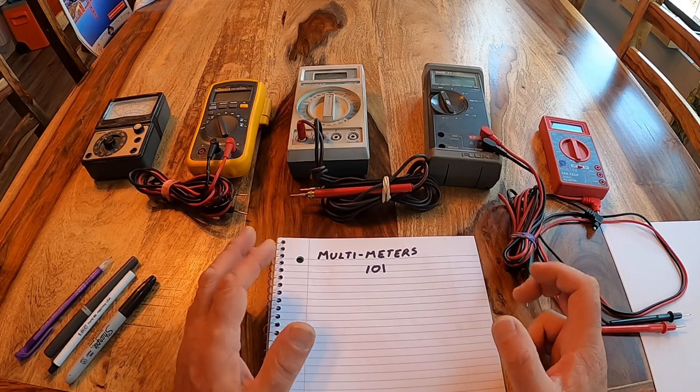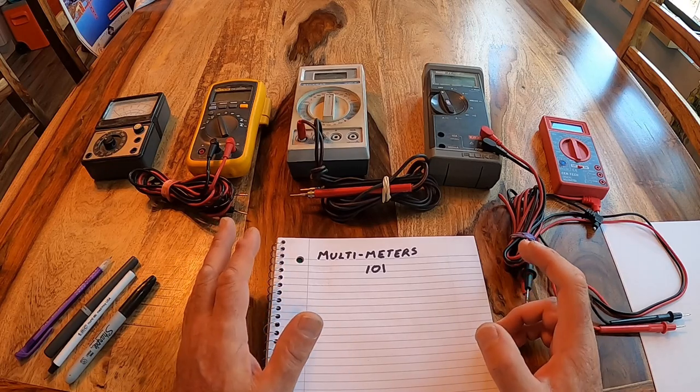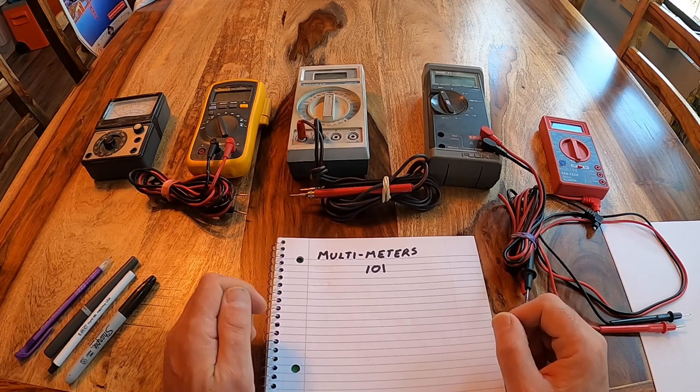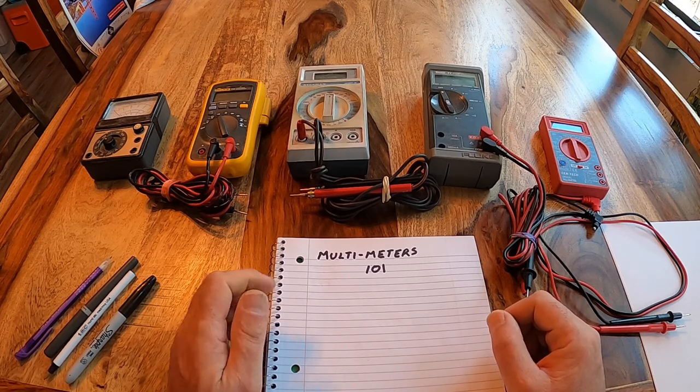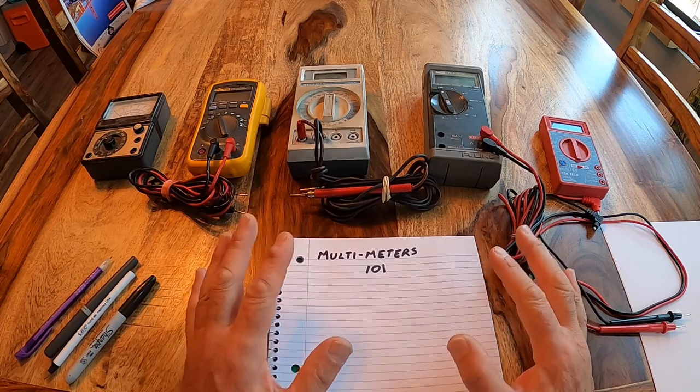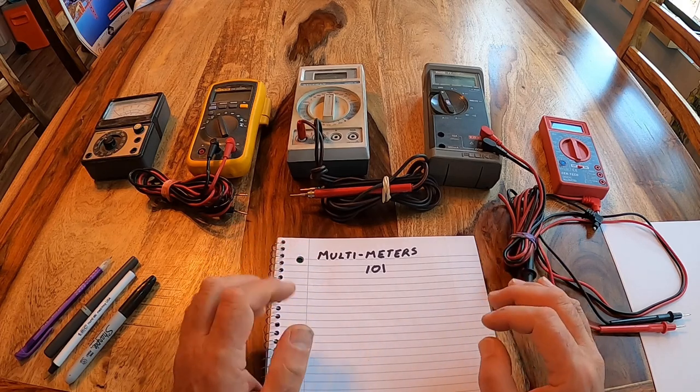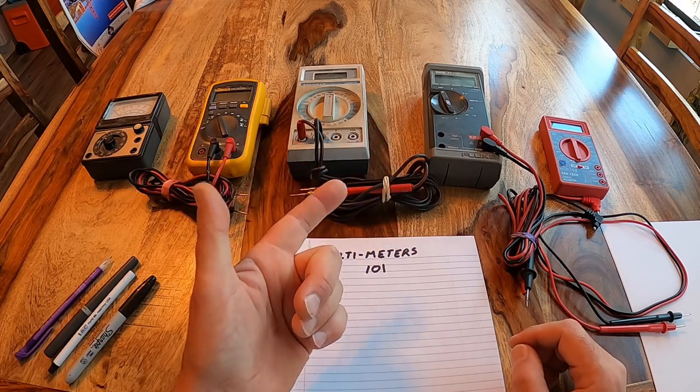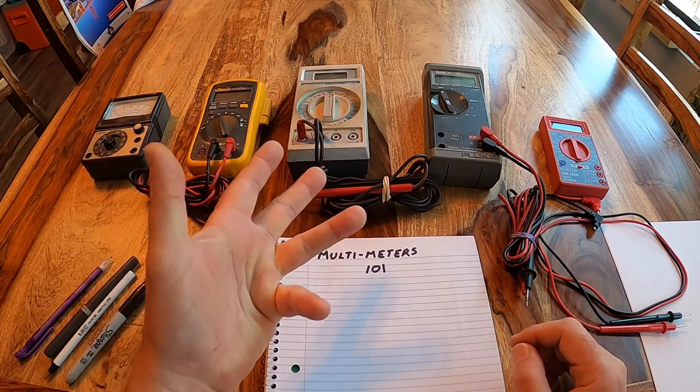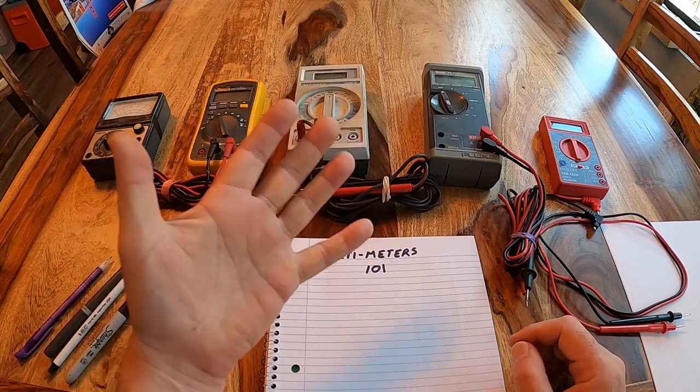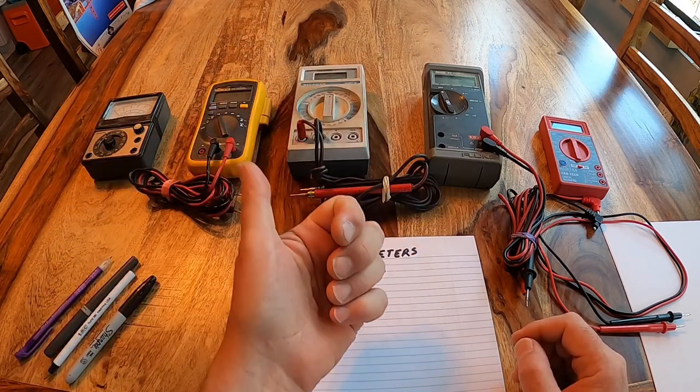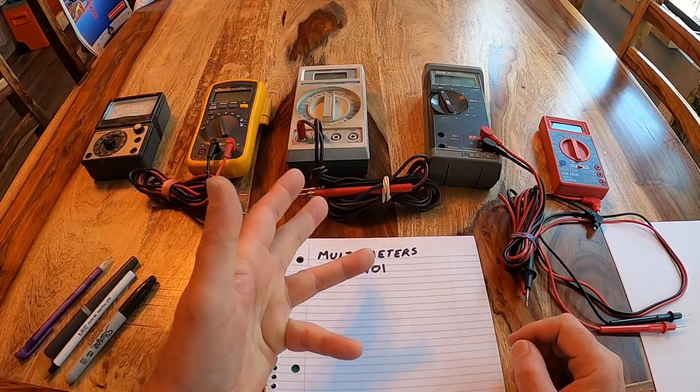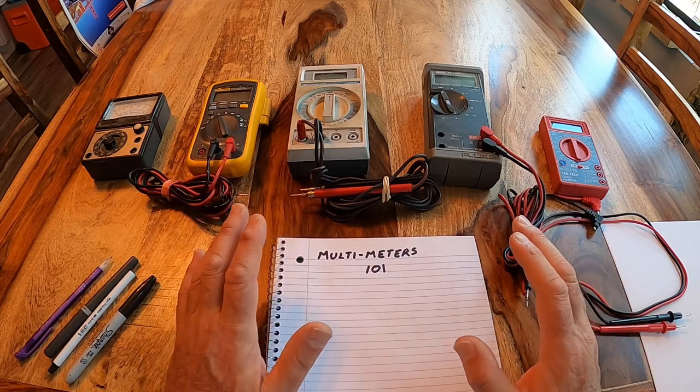Now, these multimeters are spectacular devices that, in the hands of a good technician, can fix just about any electronic device. Multimeters can measure voltage, current, frequency, conductivity, forward voltage drops, AC volts, DC volts, DC current, RMS values, all kinds of stuff.